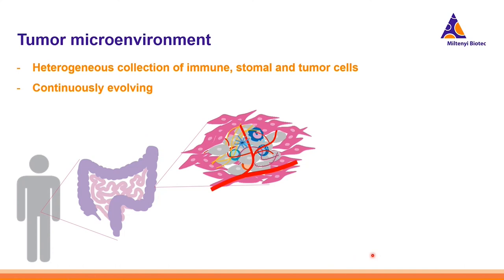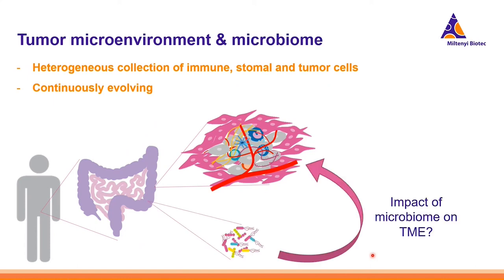Just as a teaser to provoke some thinking: when researching before this presentation, I also came across the microbiome. It is another aspect which makes it even more complex to think about the tumor microenvironment. There has been a lot of research on the microbiome and how it impacts the immune system, and it certainly can also have an impact on the tumor microenvironment — adding another layer of complexity to the whole system, looking not only at the cells but also at the microbiome and the interplay of both.